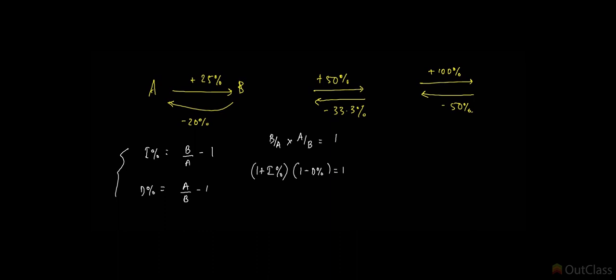If you use minus, if you use plus, you'll get the value of D as minus 20, doesn't really matter. I'm just going to go with 1 plus D percent into 1 minus I percent is equal to 1. This is the relation between the increase percent and the corresponding decrease percent that will negate the change.